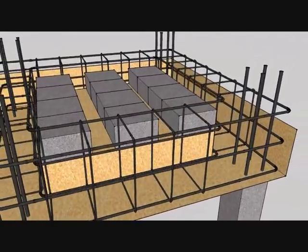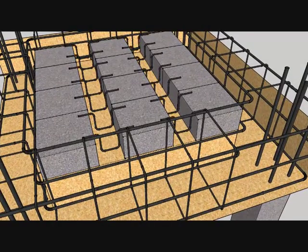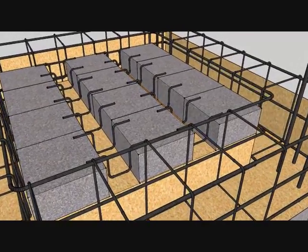The spaces in between the blocks are what we call ribs, which are essentially smaller beams. This area also needs to be reinforced.